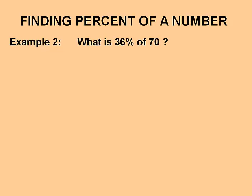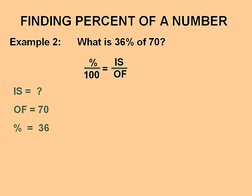In the next example we are going to find the percent of a number. Example 2: What is 36% of 70? We again write down our equivalent fractions: percent over 100 equals is over of. This time we don't know the 'is' part. We know 'of' is 70 and the percent is 36, giving us 36 over 100 equals something over 70. Try your estimating skills — write down what you think would replace 'is' to make these two fractions equivalent.